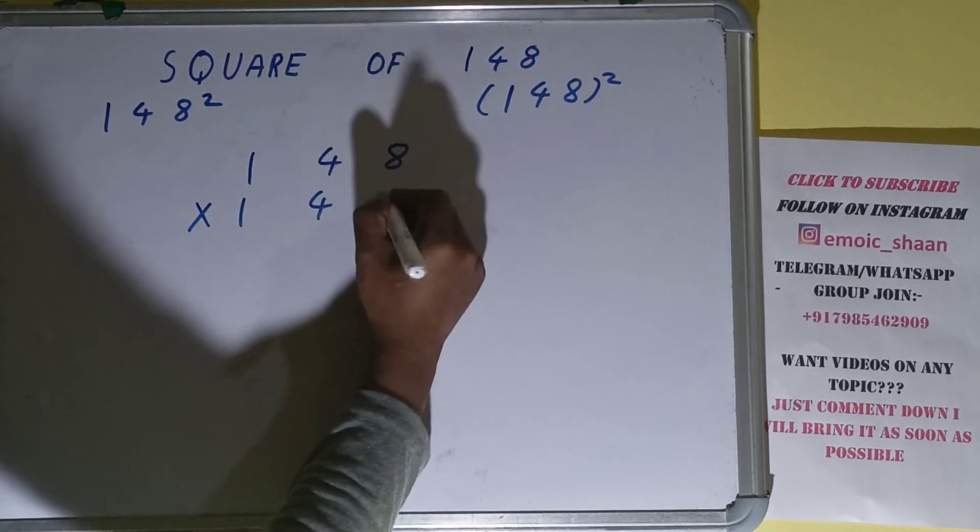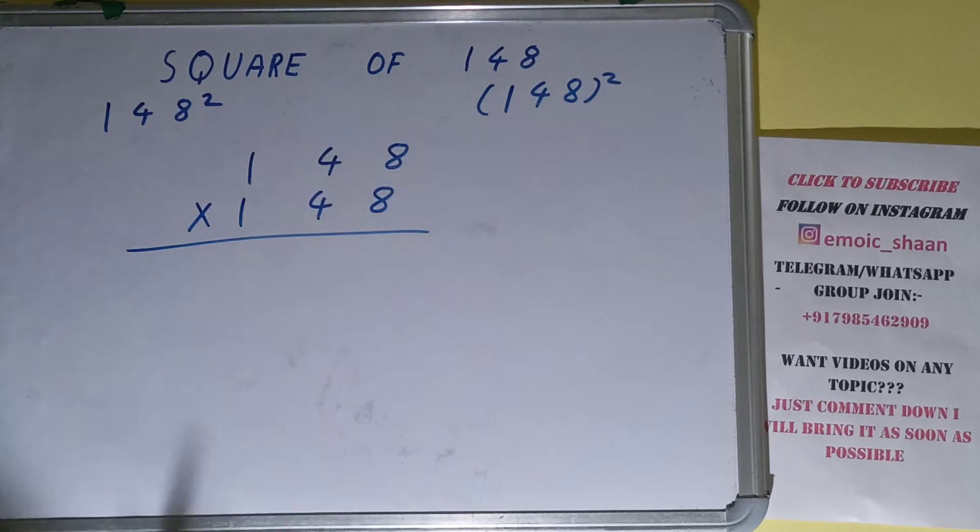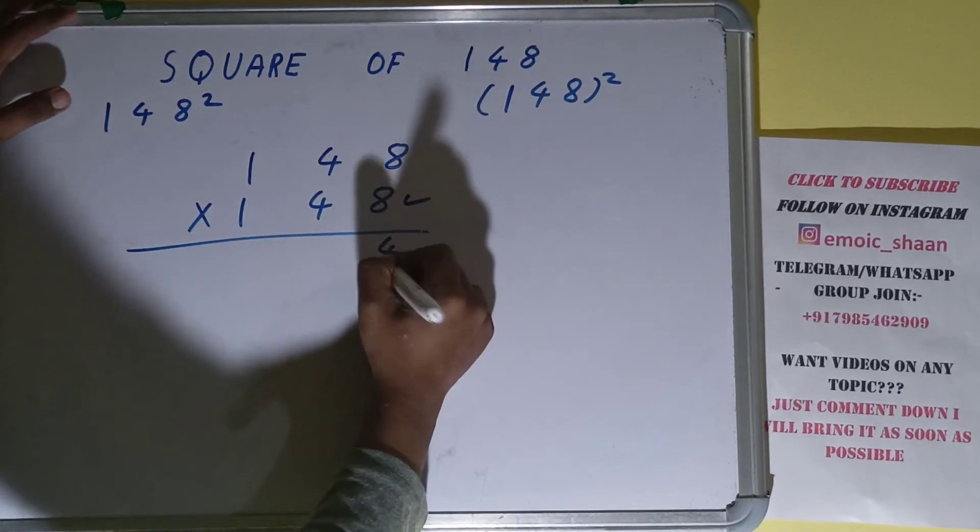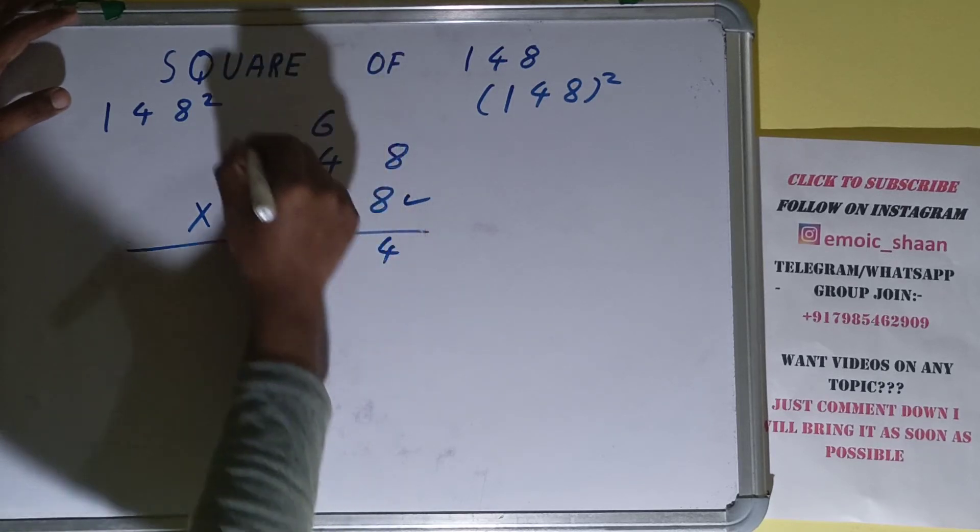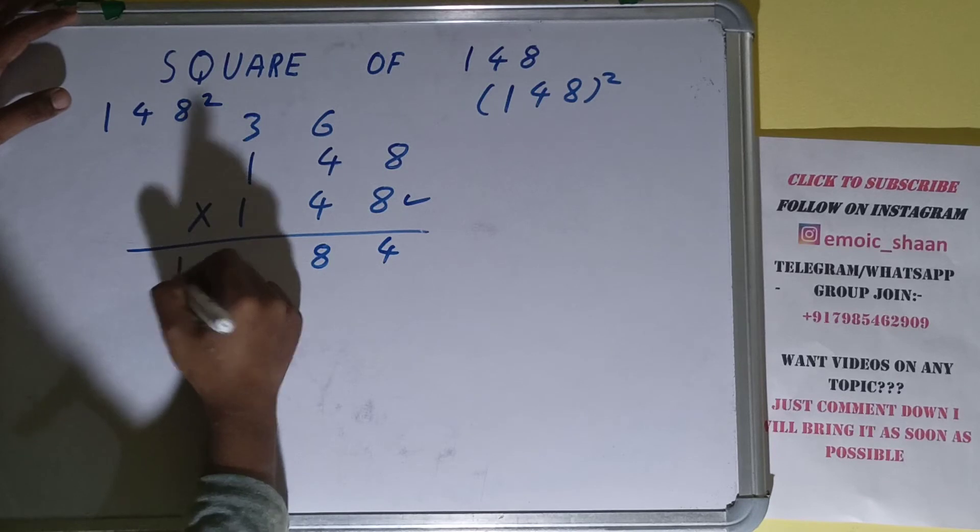Let's begin with this: 8×8 is 64, 4 down, 6 carry. 8×4 is 32 plus 6 equals 38, 8 down, 3 carry. 8×1 is 8 plus 3 equals 11.